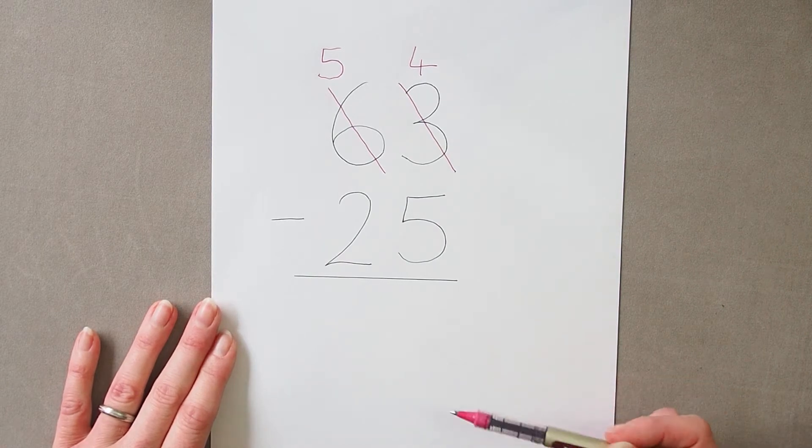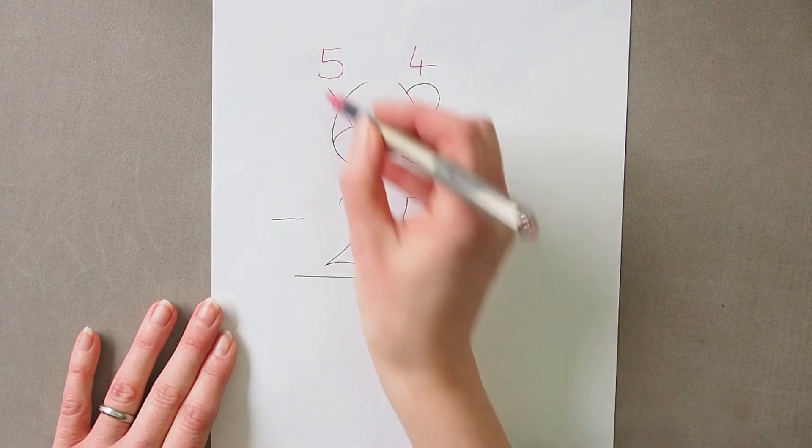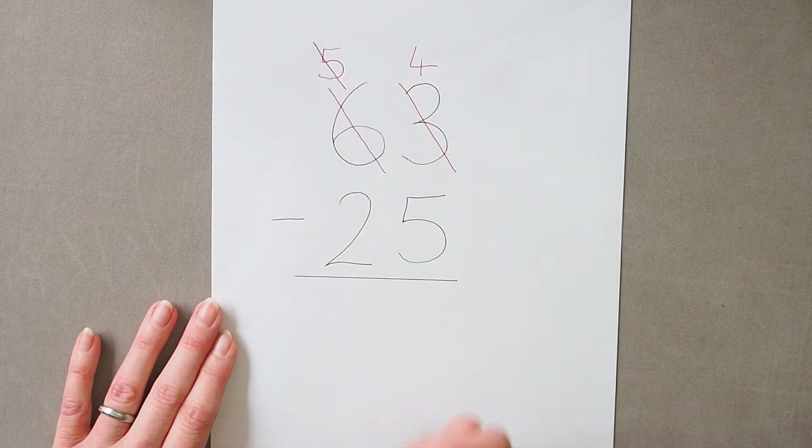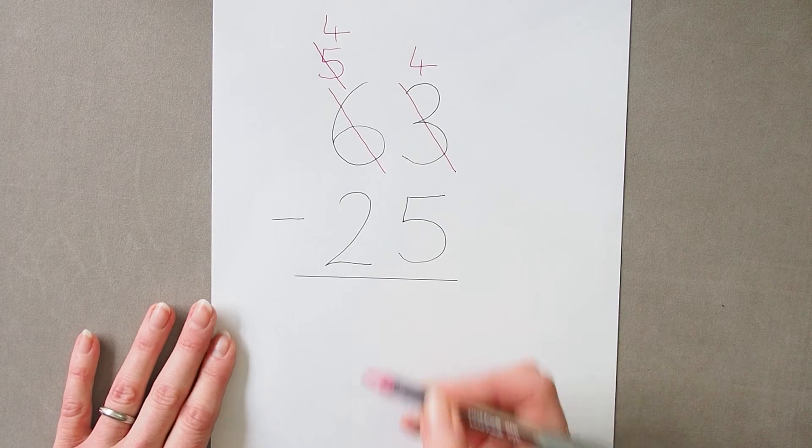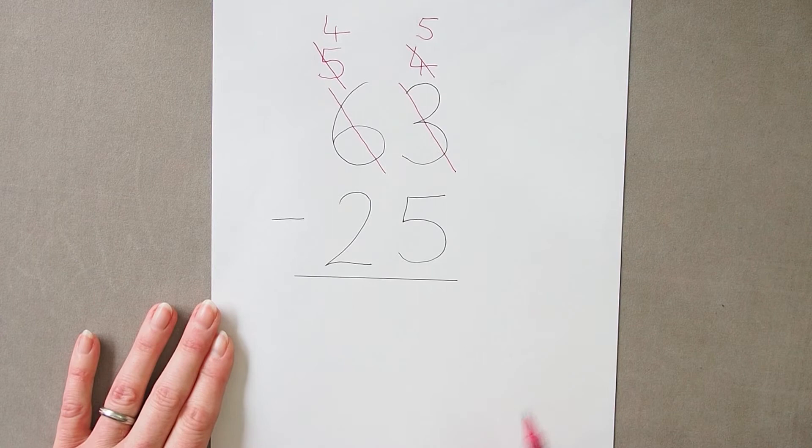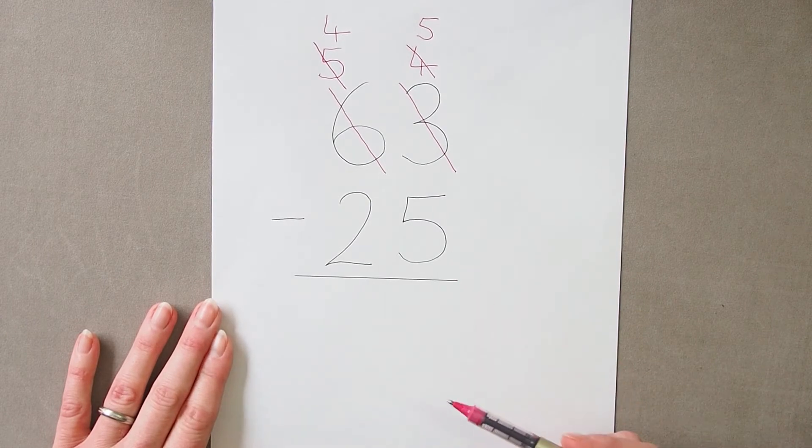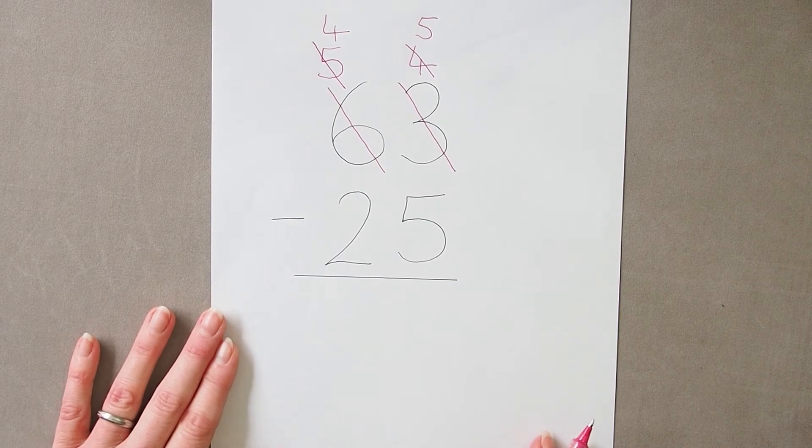And when they look at this calculation again they see 4 take away 5 still isn't going to work, they need another ten. So they will take another ten out, leaving four tens, and again add it onto this column as a 1 to give 5. And then it will work, 5 take away 5 is 0, but obviously it will be the wrong answer.